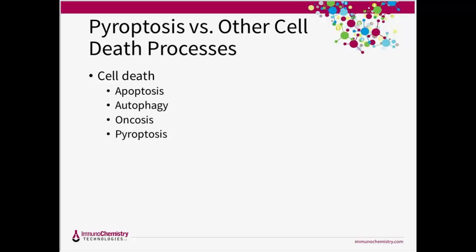When researchers think of cell death, apoptosis is often the first method that comes to mind. This isn't surprising, as it was the first well-characterized program of cell death and the most widely recognized. Apoptosis is a method of programmed cell death defined by caspase activity. Other methods include autophagy — an intracellular degradation system — and onchosis, a passive form of cell death due to lethal cell injury. Additionally, a more recently identified form is the highly inflammatory caspase-1-dependent form of cell death known as pyroptosis.